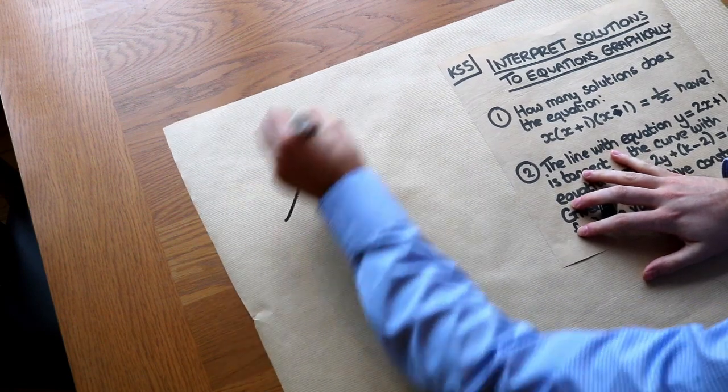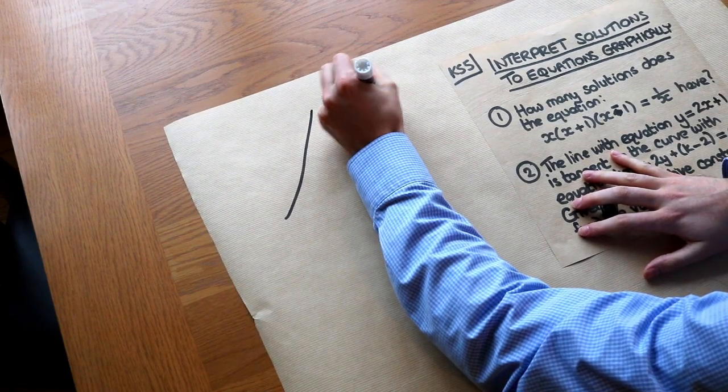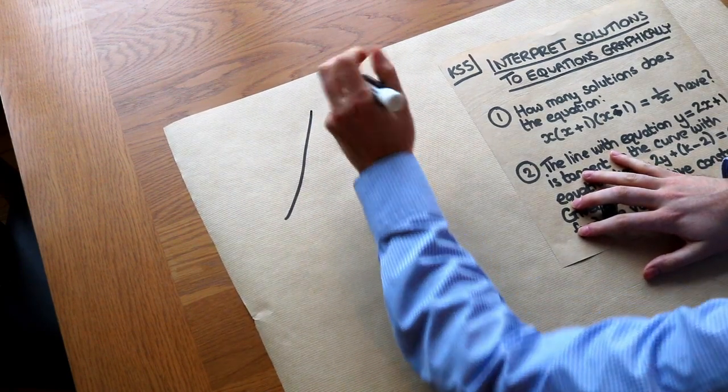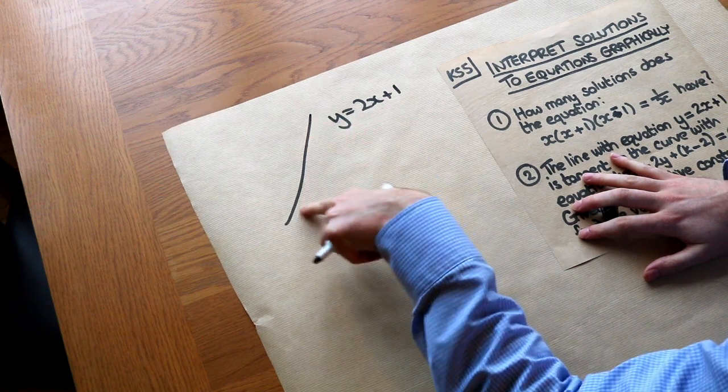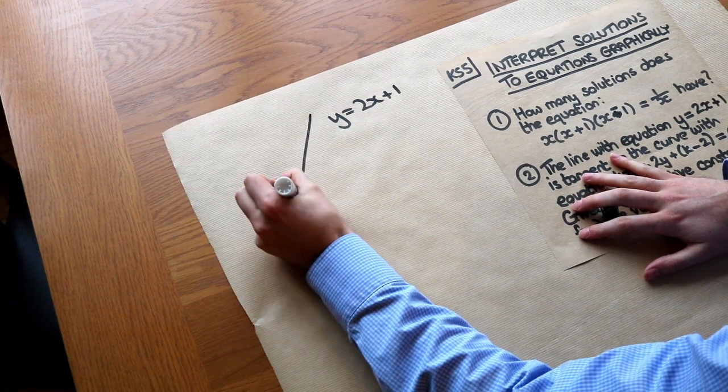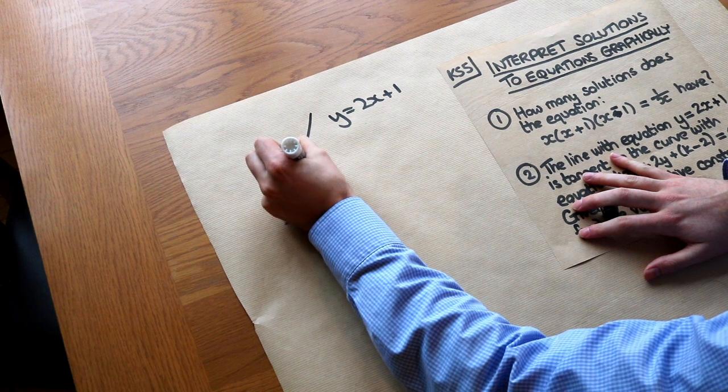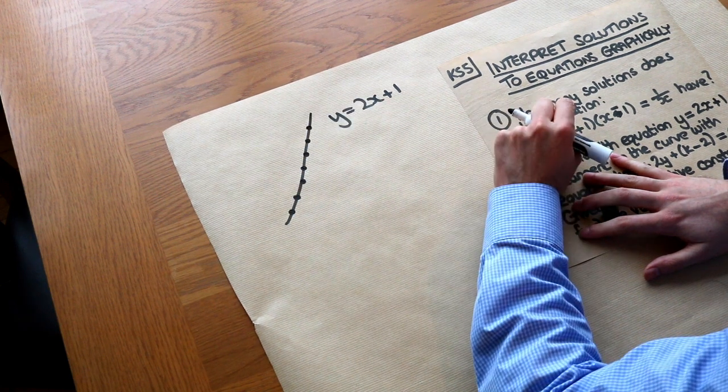If you have some line, y equals 2x plus 1, then you should understand the relationship between this equation and this line is that the line consists of all points which satisfy this particular equation.